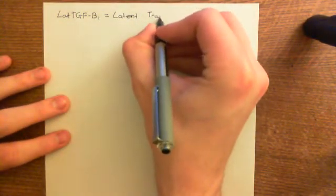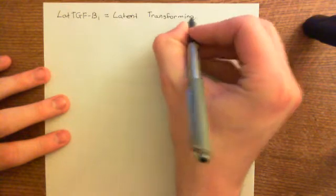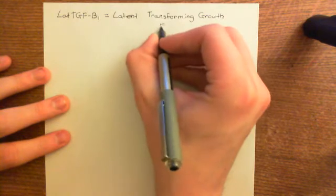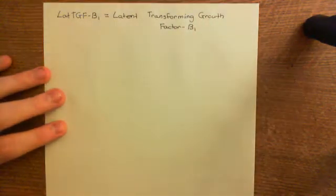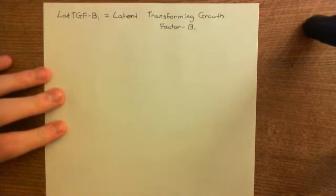The latent TGF-β1 has to be activated by something on the surface of epithelial cells. TGF stands for transforming growth factor. There are many different transforming growth factor betas, and TGF-β1 is the specific form secreted by eosinophils in its latent form. It will need to be activated by an integrin on the surface of the epithelial cells.